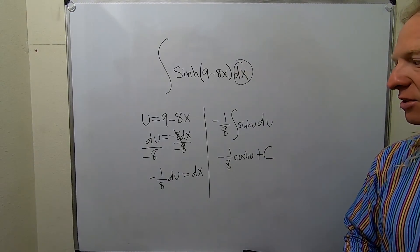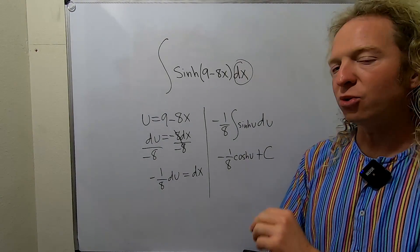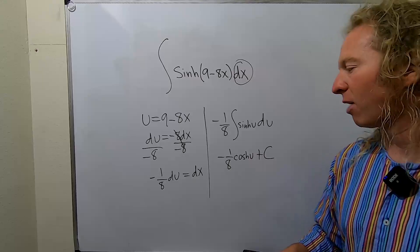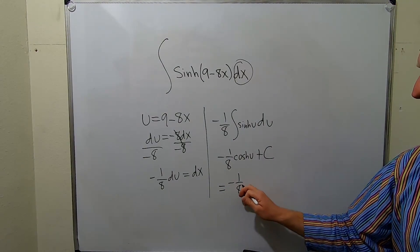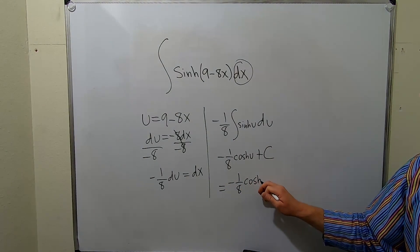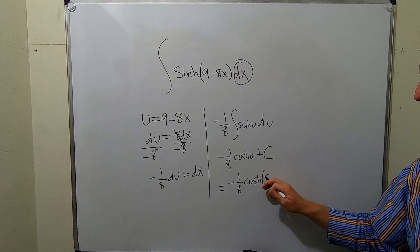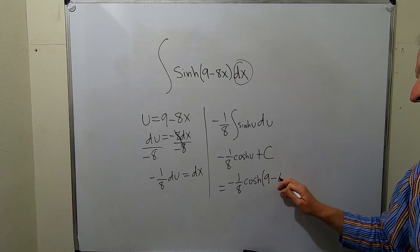The very last thing to do is replace u with what it actually is in the problem. So this equals negative 1/8 cosh, and our u was 9 minus 8x. So we have 9 minus 8x.